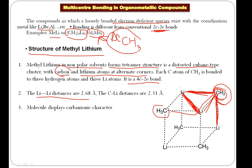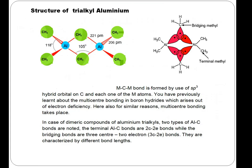To summarize multi-center bonding in methyl lithium: number one, it's a tetramer in non-polar solvents; in the tetramer, lithium and methyl are arranged alternately in a cubane structure. The methyl group is bonded to three lithium atoms, and this bond is not a normal two-center two-electron bond — it is a four-center two-electron bond.